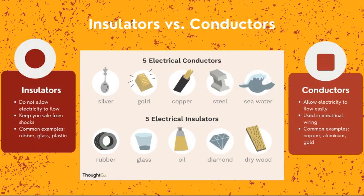First, let's look at insulators and conductors. Insulators do not allow electricity to flow through — they keep you safe from shocks. Common examples include rubber, glass, or plastic. Conductors allow electricity to flow through easily; they are found in electrical wiring. Common examples include copper, aluminum, and gold.